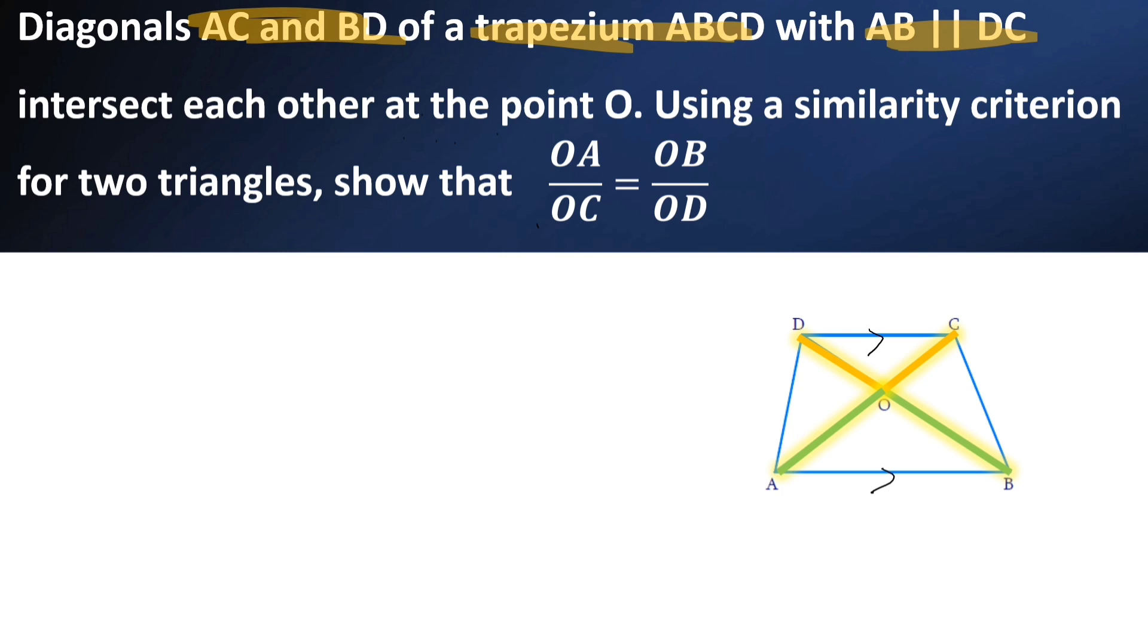Here, if you observe, AB parallel to CD. So, angle D is equal to angle B, angle C is equal to angle A because they are alternate angles. So, we can prove that triangle OAB is similar to triangle OCD.